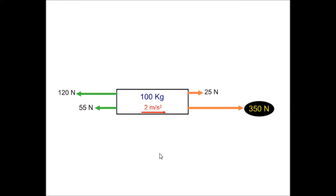Here's our final diagram. We have the object moving to the right, and the missing force is 350 Newtons, also directed to the right. Thank you.